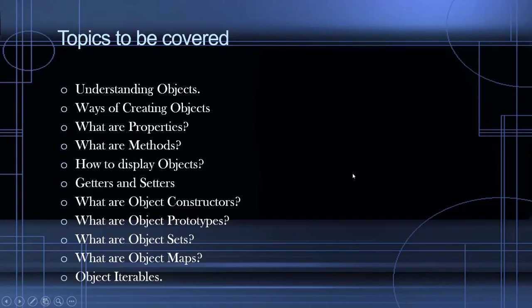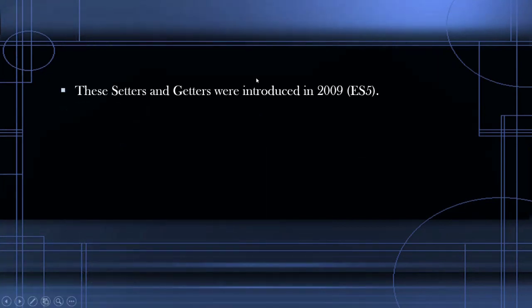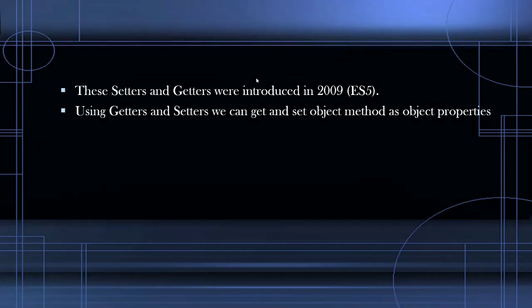Let's continue with our object. In this we are going to learn about getters and setters in objects — what is the get keyword, what is the set keyword, and why we have to use them. These getters and setters were introduced in 2009, that is ECMAScript 5. Using getters and setters we can set object methods as properties.